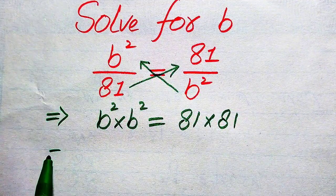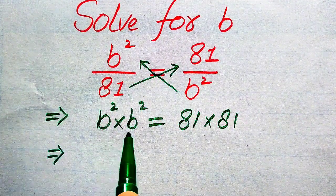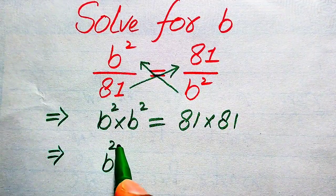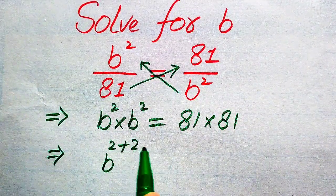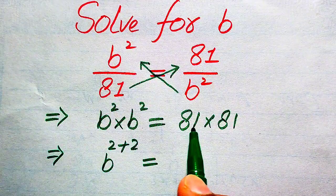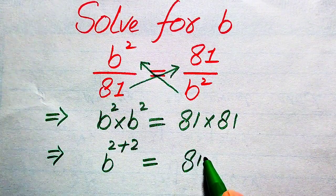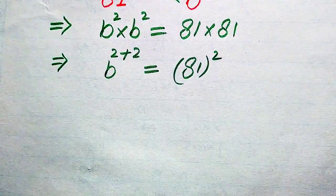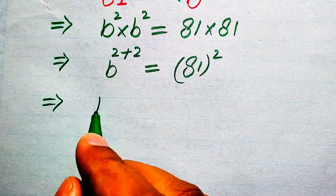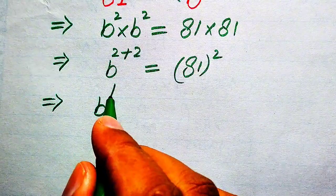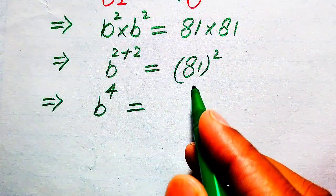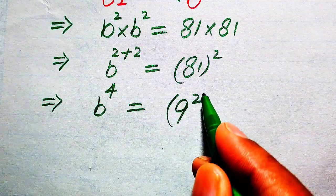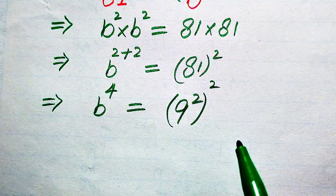The bases on both of these two terms are the same, so we add the exponents. It will be written as b to the power of 2 plus 2. In the same pattern, we write 81 multiplied by 81 as 81 whole square. So on the left hand side we get 2 plus 2 equals 4, and on the right hand side we write 81 as 9², giving (9²)².